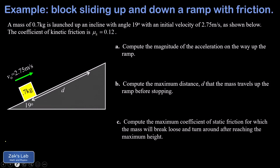In this video, we're tackling a multi-part problem with a block sliding up and down a ramp with friction. In our initial state, we have a speed of 2.75 meters per second up the ramp. It's a really common mistake for students to assume there's still a force pointing up the ramp, but there are no forces pointing up the ramp at this point. We've launched this thing by pushing it up the ramp, but we have already let go. So our initial velocity is 2.75 and the block is slowing down.